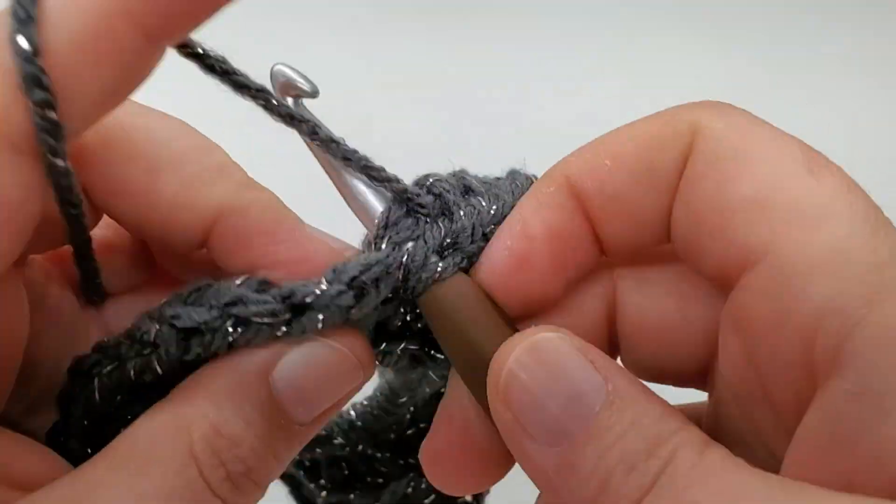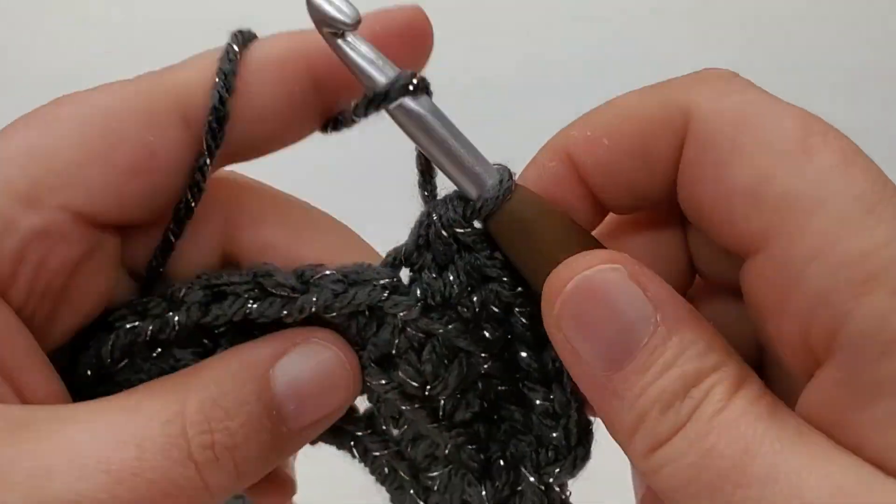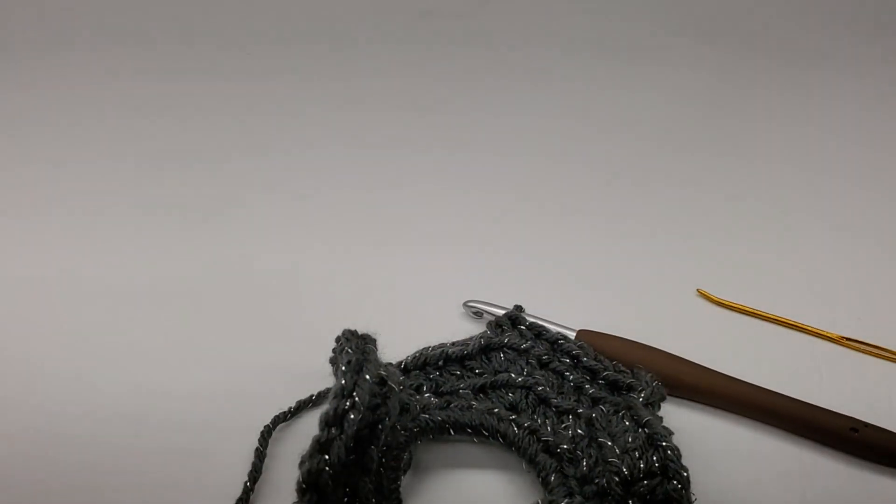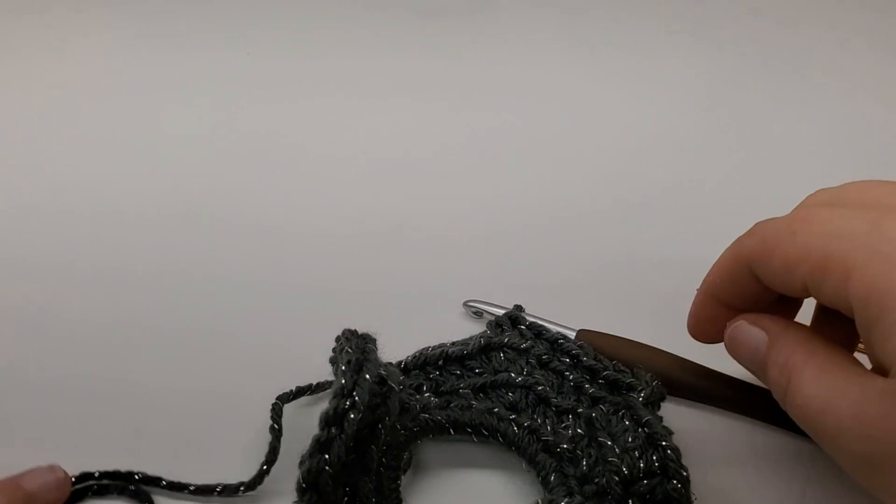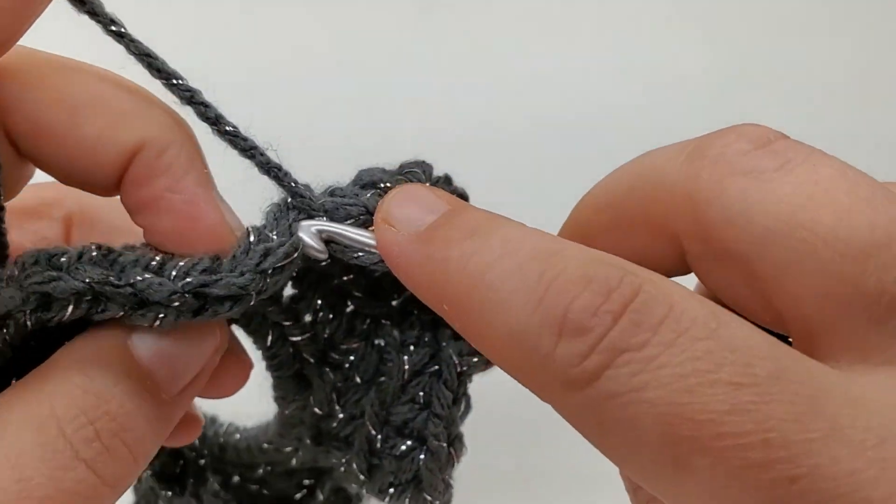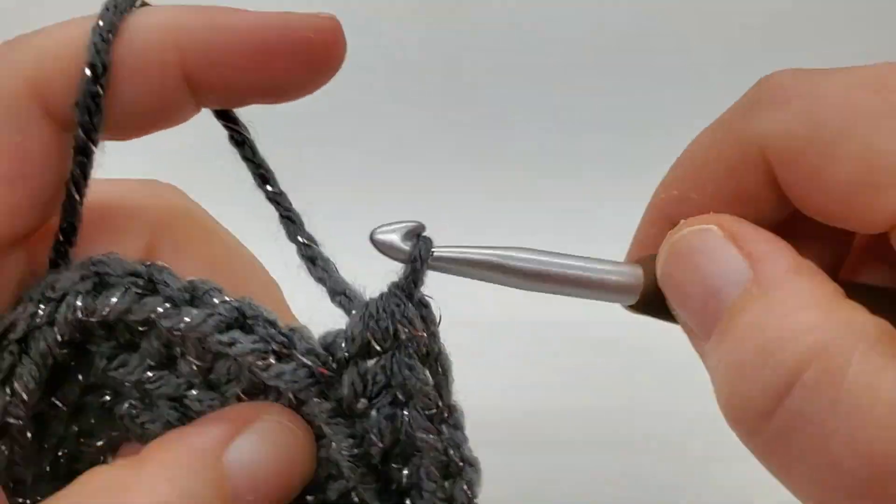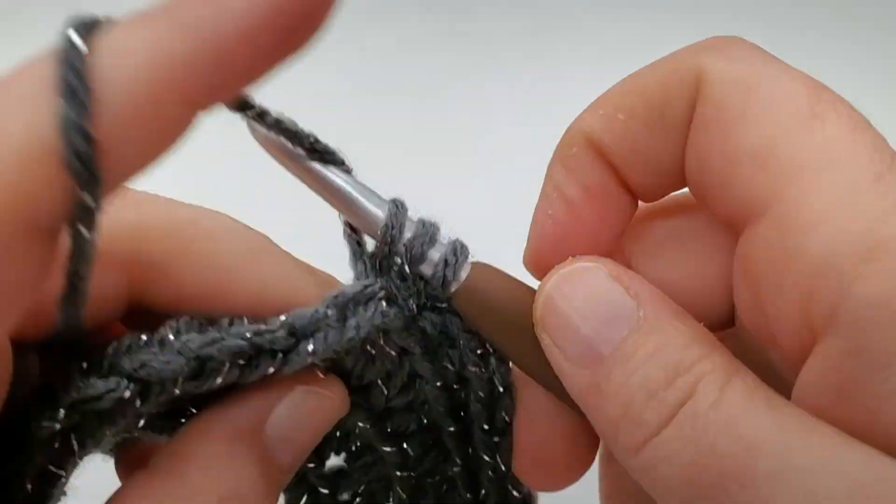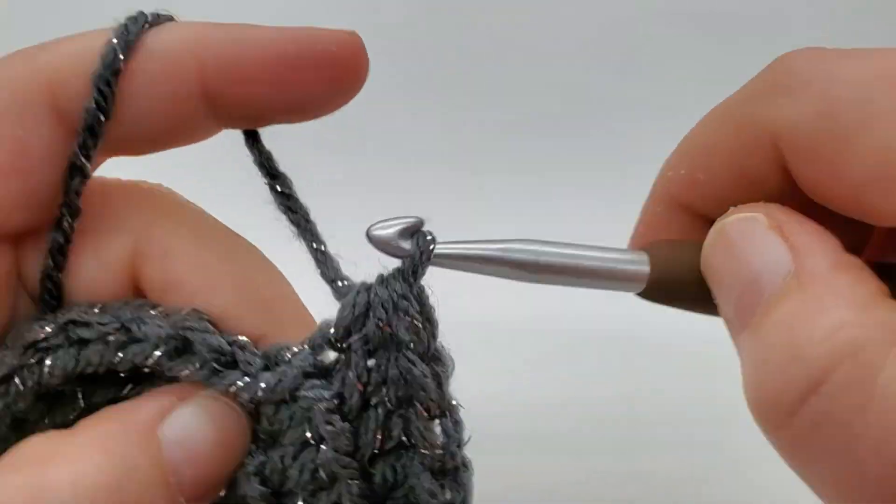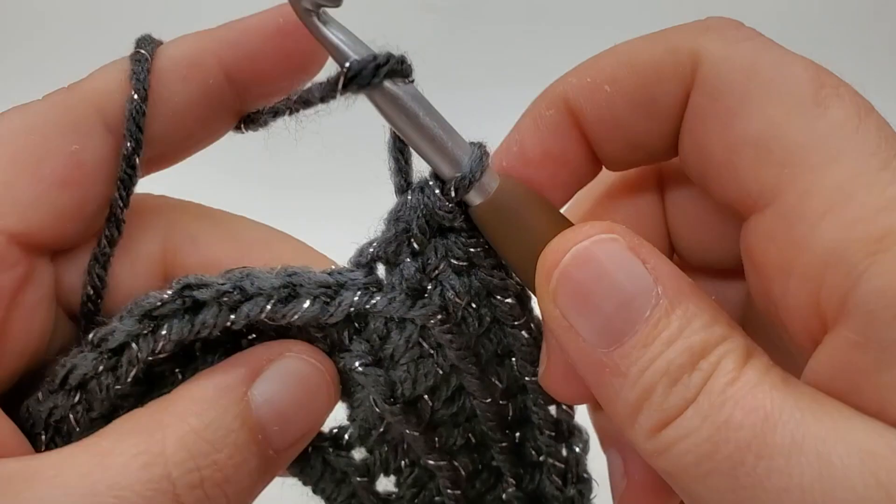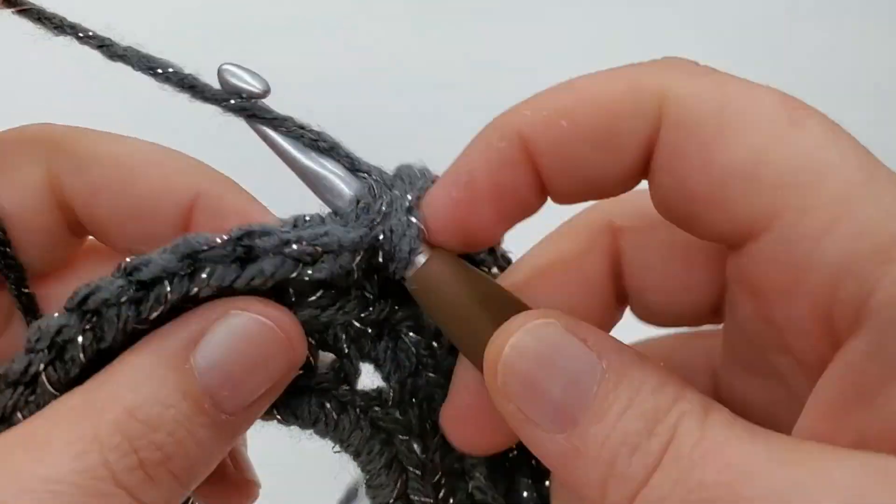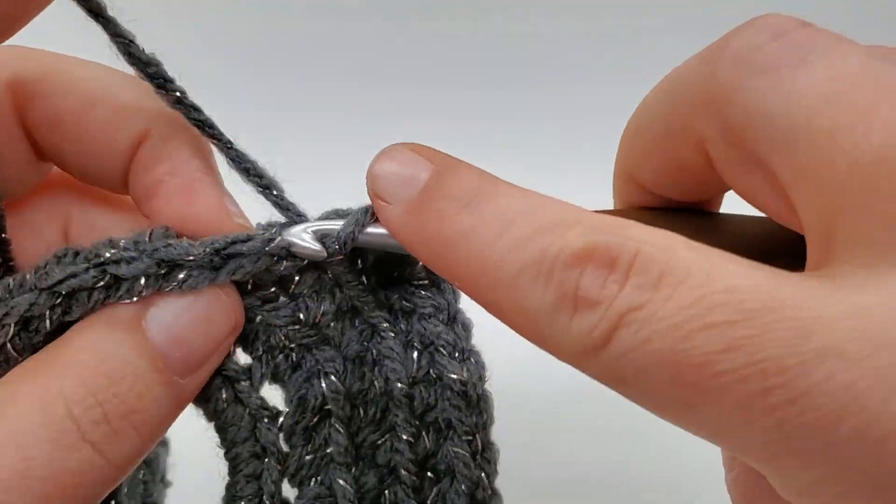It's so easy because the hook just naturally wants to go that way. Give me some slack. So go ahead and work one back loop half double, all the way around. And I will meet you back at the beginning.